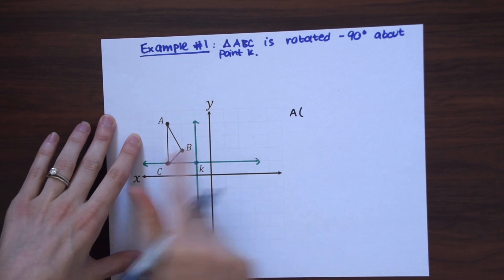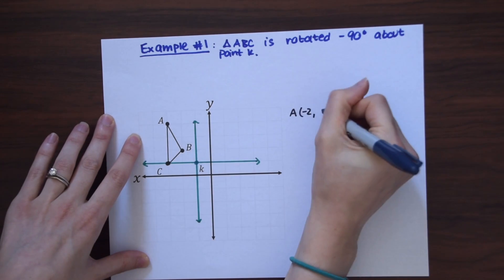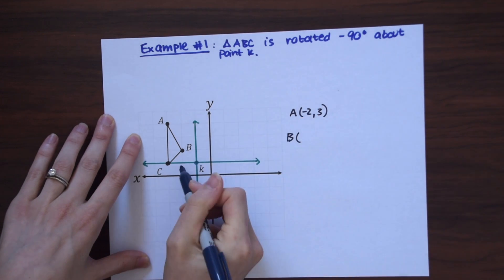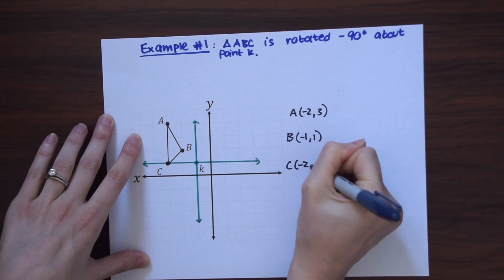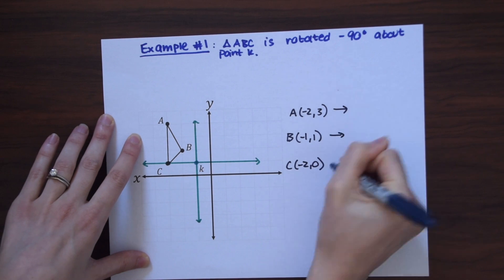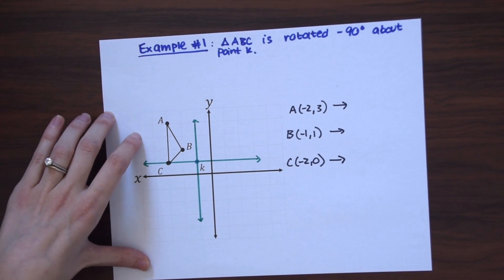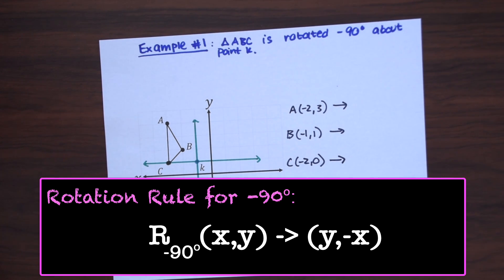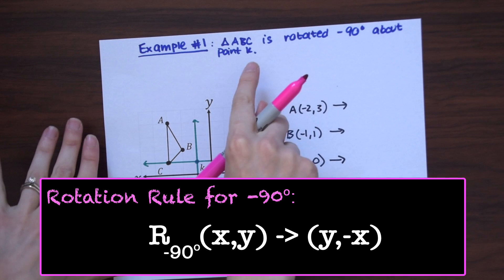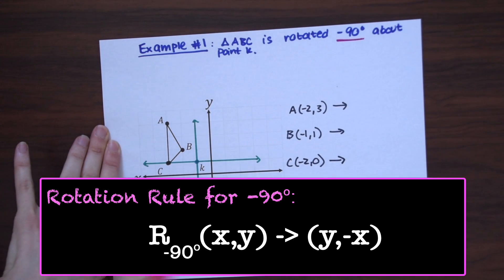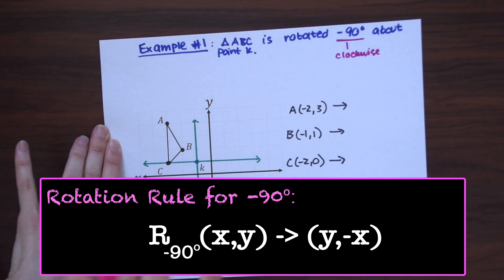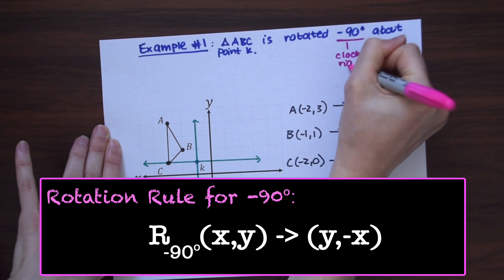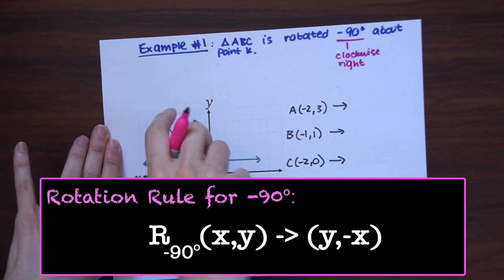Now that we have our new X and Y axis, we can find the coordinates of triangle ABC relative to our new coordinate system. A is (-2, 3), B is (-1, 1), and C is (-2, 0). Since we're rotating -90 degrees, and it's negative, we know we're going clockwise — rotating the triangle to the right.